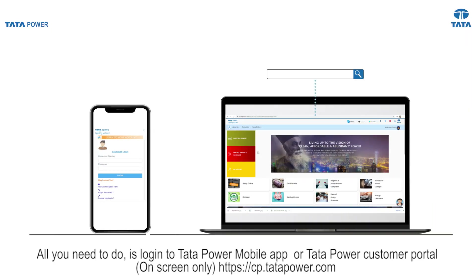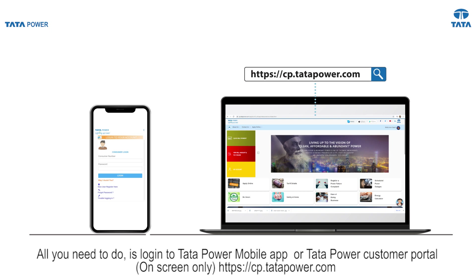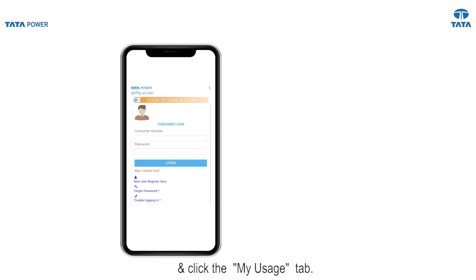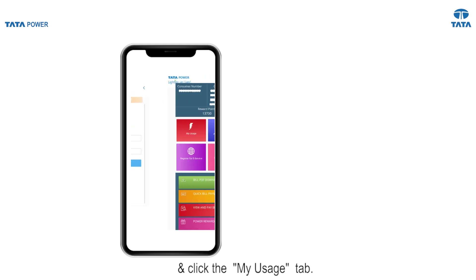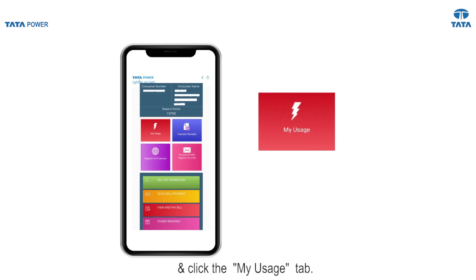All you need to do is login to the Tata Power mobile app or Tata Power customer portal and click the My Usage tab.